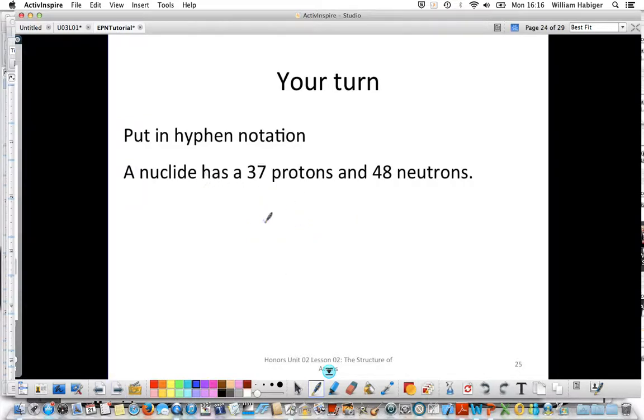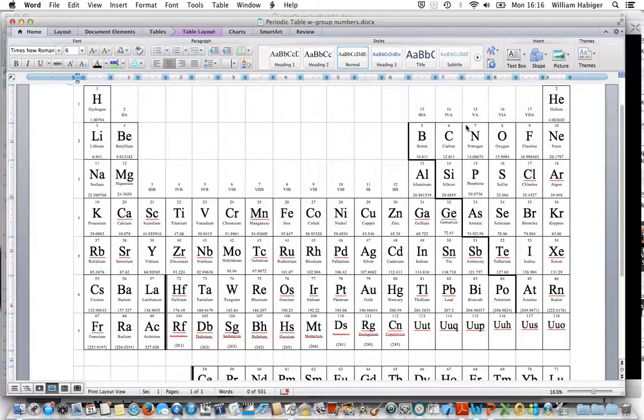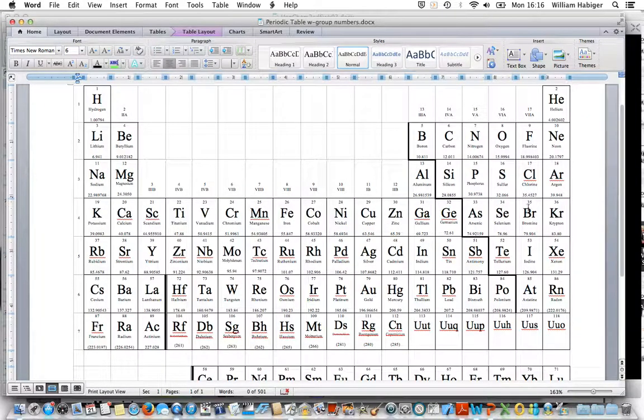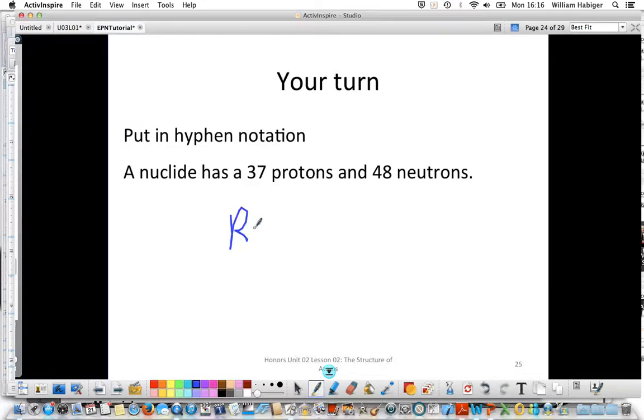Another unknown nuclide has 37 protons and 48 neutrons. So we go to our periodic table and we look for 37 protons. 37 protons. So it's going to be rubidium, the atomic number of 37. So rubidium. And then we want the mass number, which is going to be the protons plus the neutrons. So 30 and 40 is 70, 8 and 7 is 15. So rubidium-85.